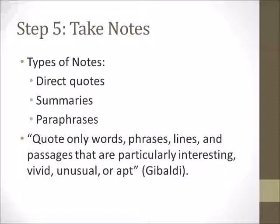Step number five is when you want to start digging through those sources. You want to start taking notes. Typically there are three types of notes: direct quotes, summaries, and paraphrases. As you read through an article or book, you may want to take down direct quotes, but only quote those words, phrases, lines, and passages that, according to Joseph Gibaldi, are particularly interesting, vivid, unusual, or apt. Beyond that, work with general summaries of articles or paraphrases of particular points. In your notes, make sure you are very clear with yourself about when you are quoting directly versus summarizing or paraphrasing in your own words.